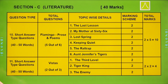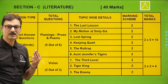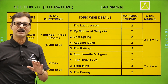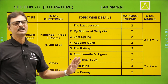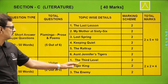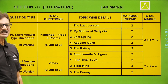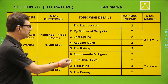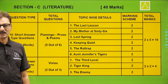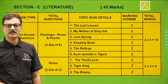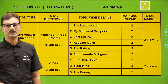Moving on to short answer type questions based on Vistas. Three questions are given, you have to attempt any two — so again you have choice. The questions asked in the sample paper are: one from 'The Third Level,' another from 'The Tiger King,' and the next from 'The Enemy.'